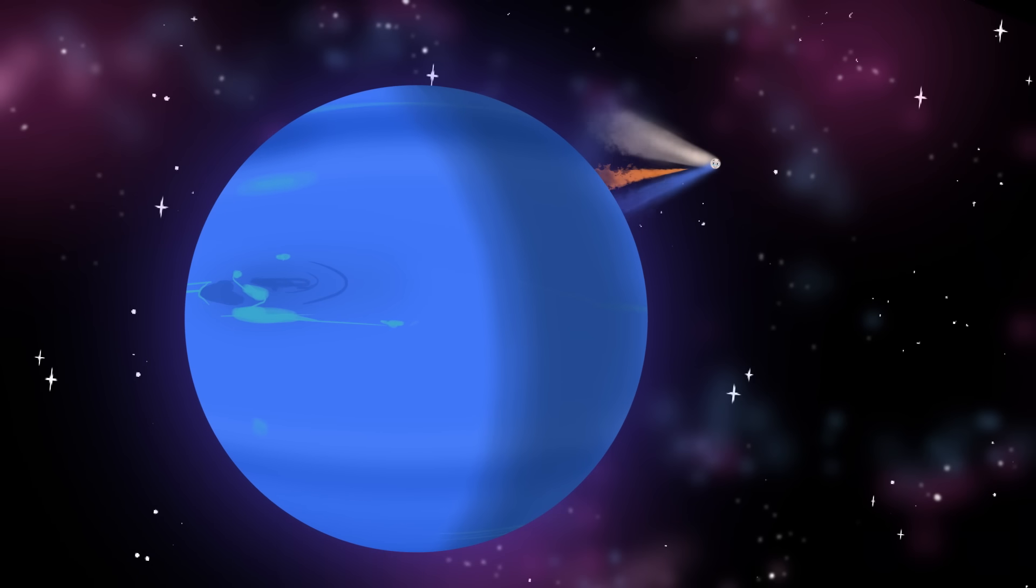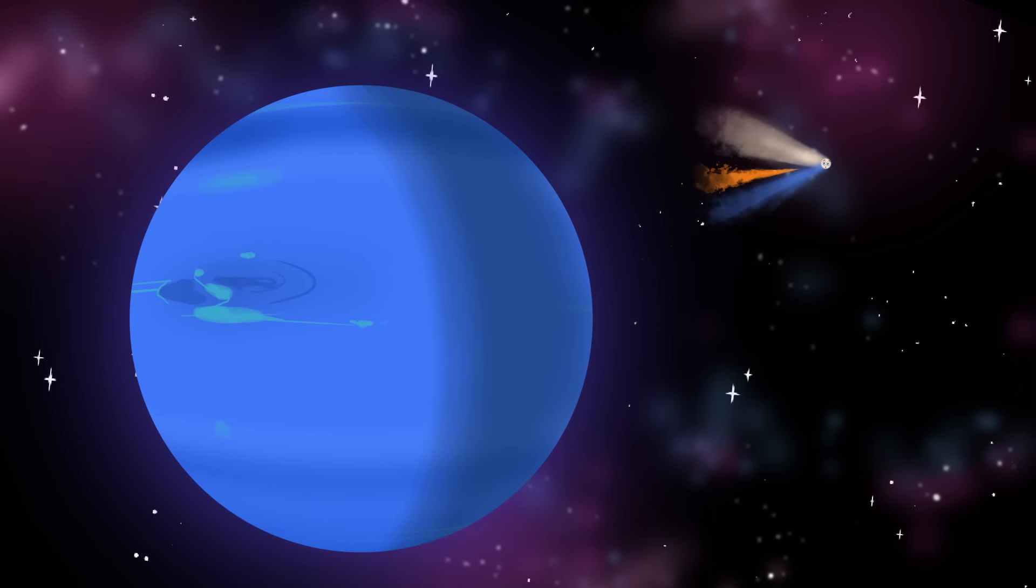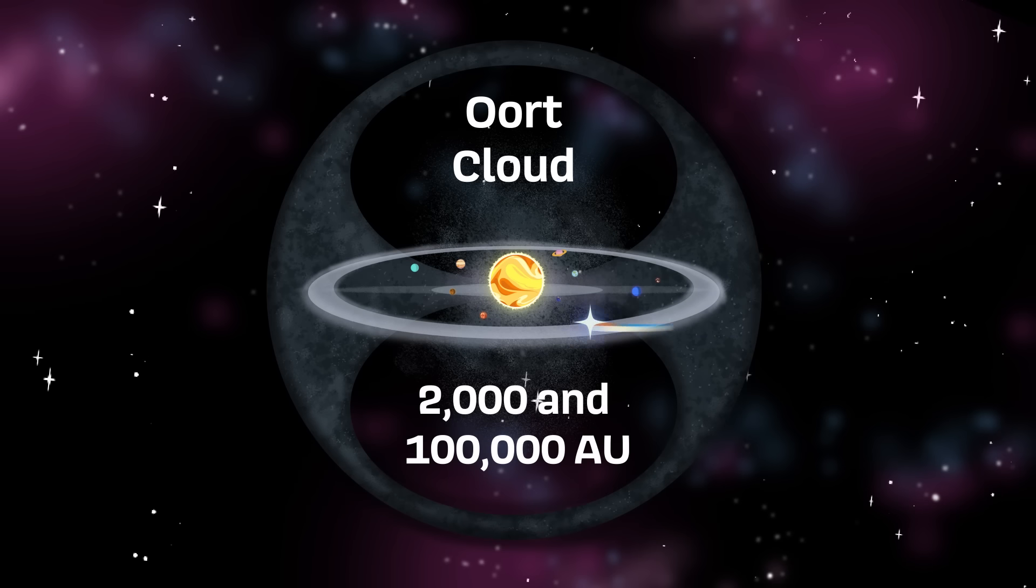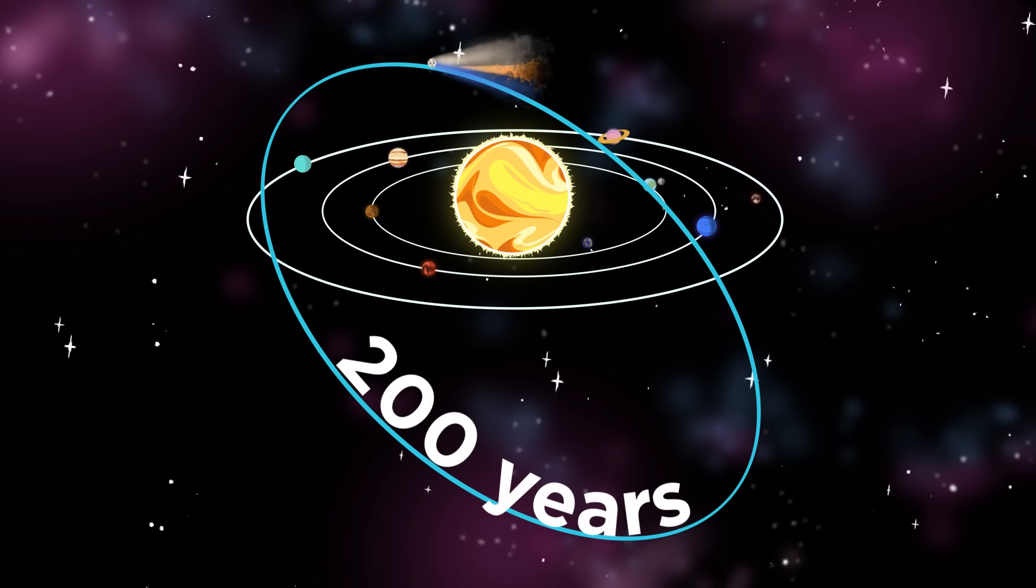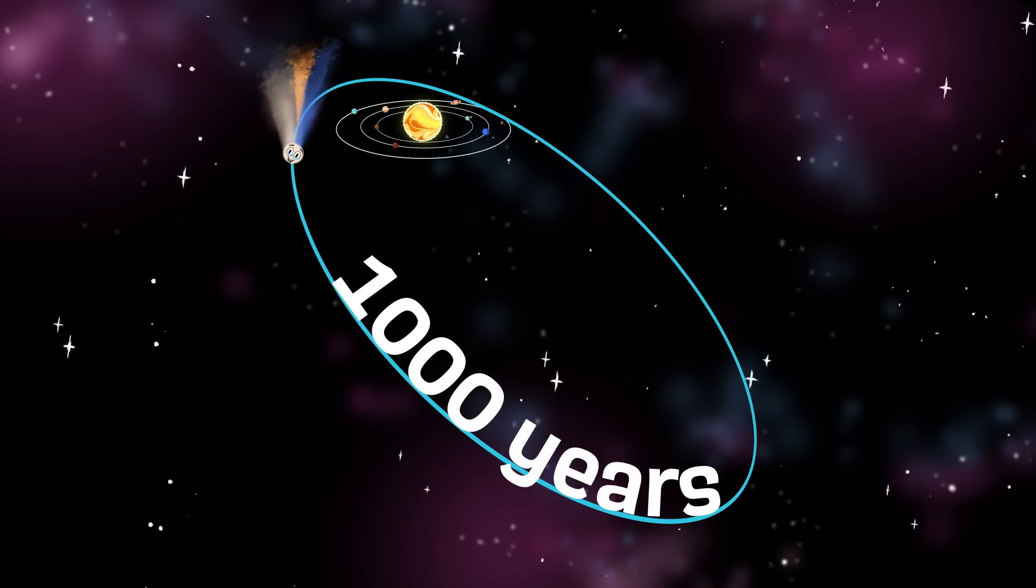Astronomers believe I originated from beyond Neptune, from the Oort Cloud, which is 2,000 to 100,000 AU. My elliptical orbit is long—it can take around 200 years or even thousands to orbit the Sun.